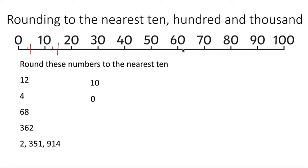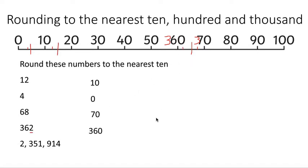Then number 68. You can find that — it's between 60 and 70. It's about here at 68, so it's definitely past our halfway mark — it's a larger number than 65. 65 is where the halfway mark would be. 65 and above we round up, so for 68 we would round up to the next 10, which is 70. Now this number 362 — it's not on our scale, but we can still use it to help us. We've got 360 and 370; the midway point would still be 365. Our number is at 362, so the 2 in the 1s column means it's closer to 360 than it is to 370.